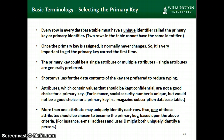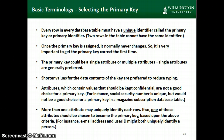Selecting the primary key is critically important. The primary key is the unique identifier for each row in our table. It normally never changes, so once we pick an attribute to be the primary key, it normally never gets updated. For the primary key, we could have one attribute or multiple attributes to uniquely identify each row, but if we can identify a single attribute, that's preferable.